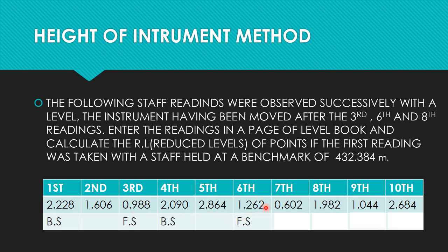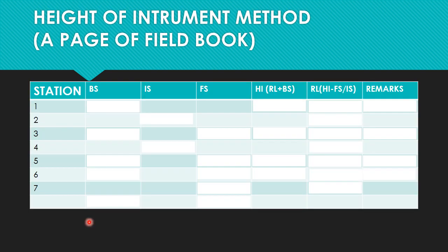The sixth reading is the last reading before shifting the instrument, making it a foresight. After shifting, the next first reading will be the back sight. The eighth reading is again a foresight since it is the last reading before moving the instrument. After moving the instrument, the next reading will be the back sight. The last reading from any instrument station before moving is always the foresight, and the first reading after moving is always the back sight.